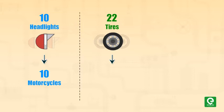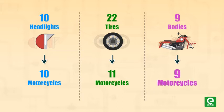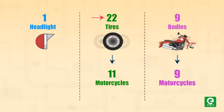With nine bodies we can create nine motorcycles only. Therefore, after we have consumed all nine bodies to create nine motorcycles, we are still left with one headlight and four tires, which are present in excess. Since the number of available bodies is totally consumed, the body is the limiting reagent.